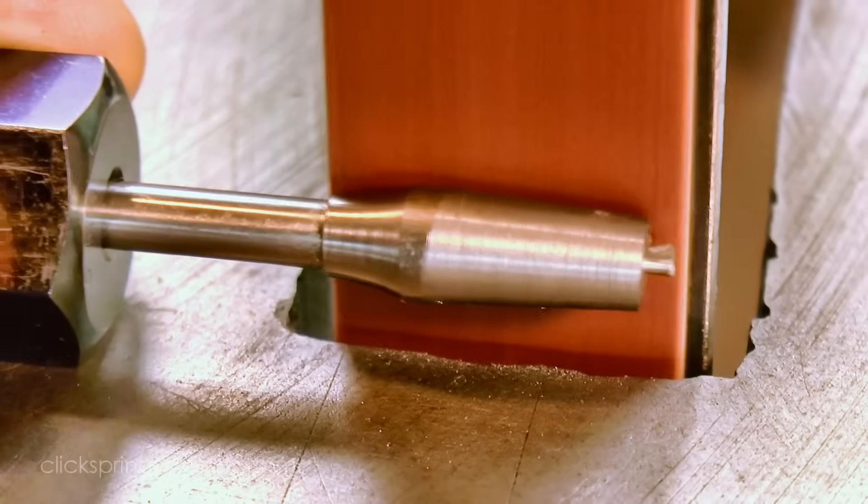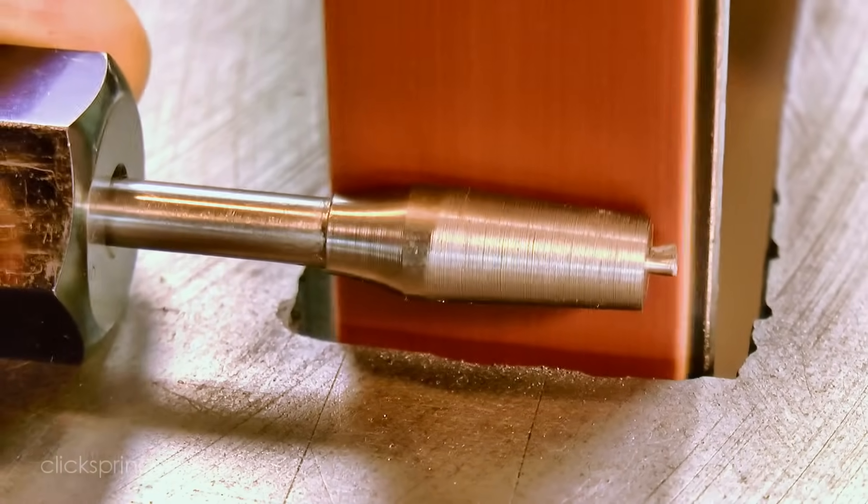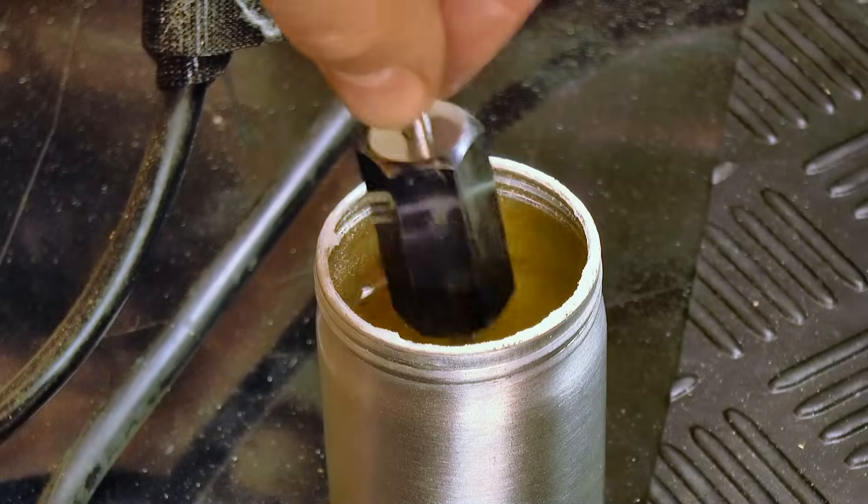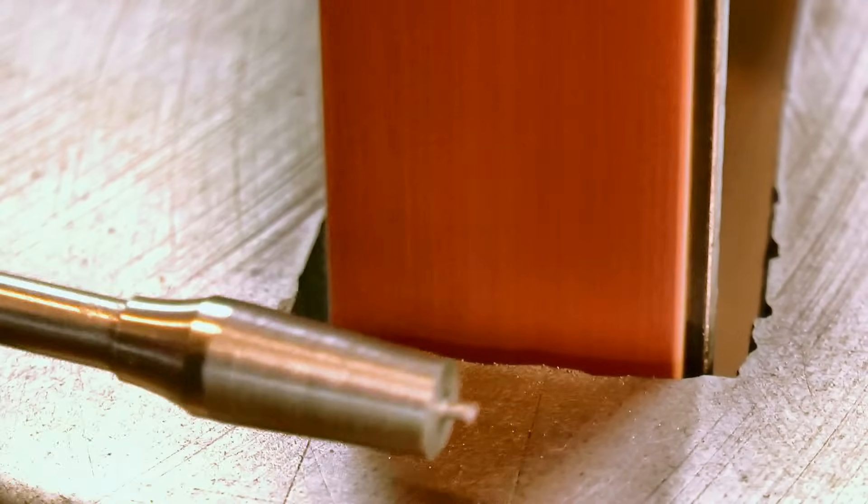Now the belt sander makes quick work of this sort of thing, but it does generate quite a bit of heat, so I need to keep the work cool. I don't want that superglue bond letting go just yet.